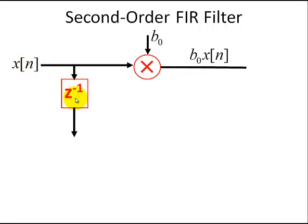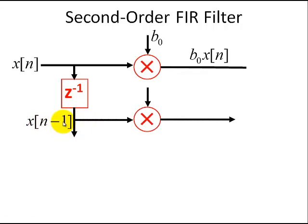We're going to take that input and feed it to a unit delay, so the output from this delay is x[n-1]. Now we're going to take the output from this unit delay and feed it as an input to this multiplier, and we're going to weigh this input by B1. So the resulting output from this multiplier is B1x[n-1].